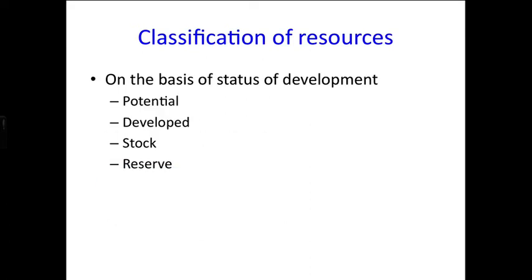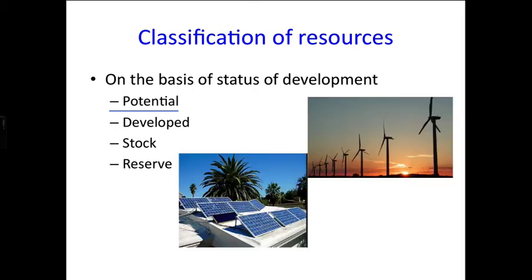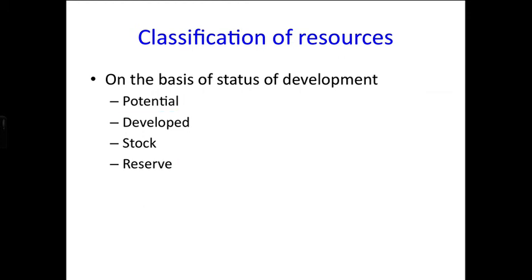On the basis of status of development, the first classification is potential resources — resources found in a region but not yet fully utilized. For example, the western parts of India, particularly Rajasthan and Gujarat, have enormous potential for development of solar and wind energy, but these have not yet been properly developed.